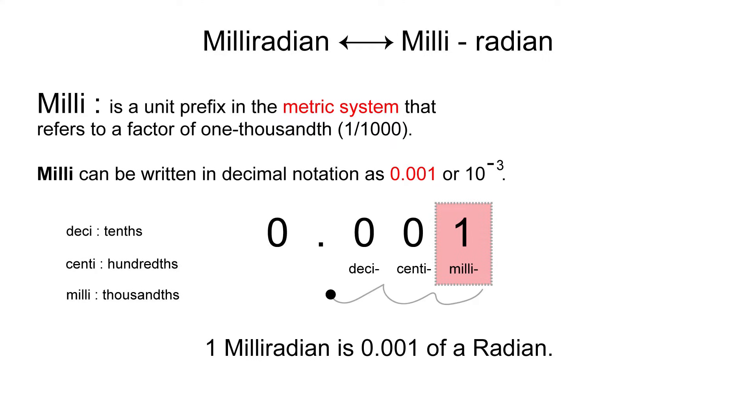We can break the word milliradian down into milli and radian. Now we've already covered radian, so we've defined that. So let's quickly define milli. Milli is a unit prefix in the metric system that refers to a factor of one thousandth of something. Milli can be written in decimal notation as 0.001 or 10 to the negative third. So if we're looking at this number here, this decimal notation, 0.001.